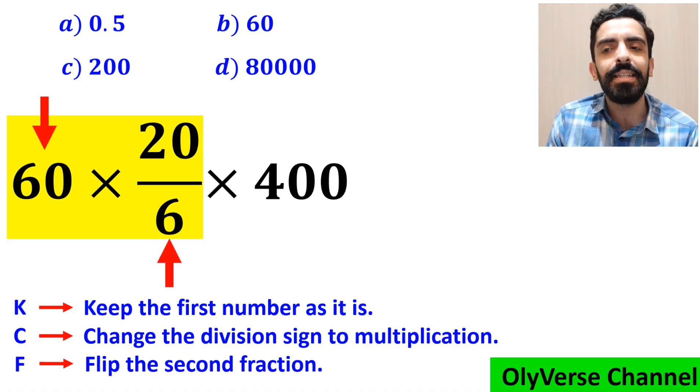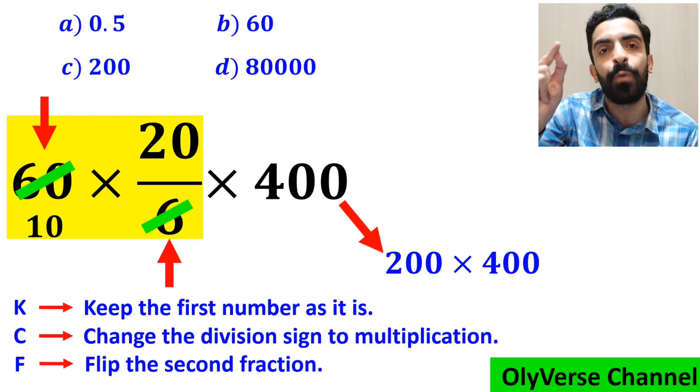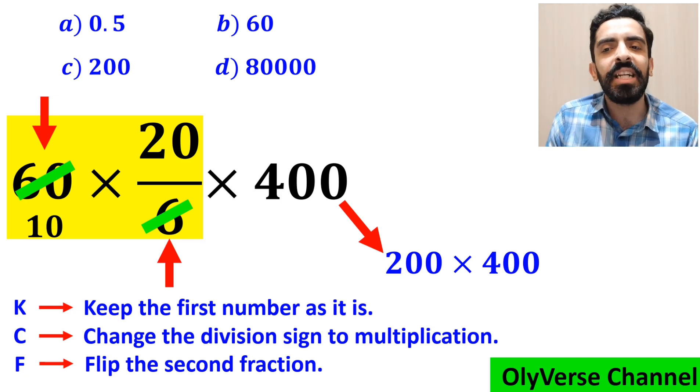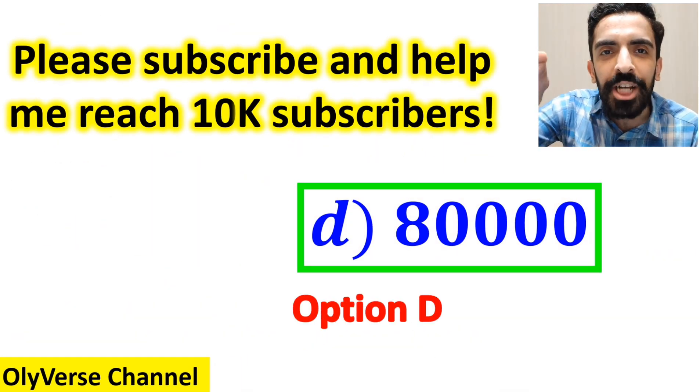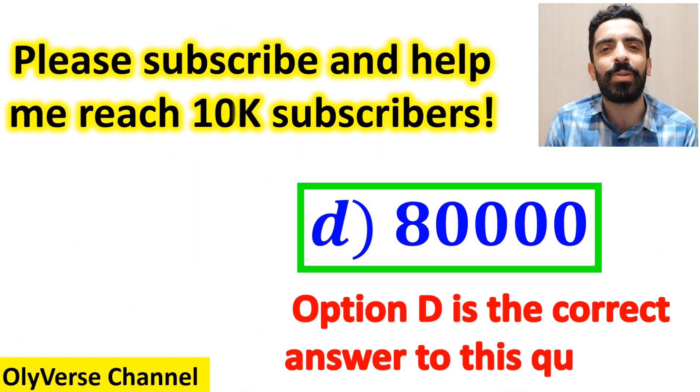As you can see on the screen, the number 60 simplifies with the 6 in the denominator. This expression simplifies to 200 multiplied by 400, which finally gives us the answer 80,000. Option D is the correct answer to this question.